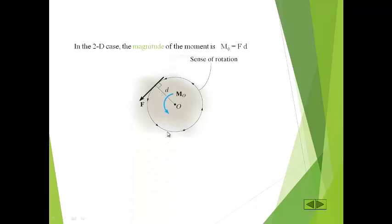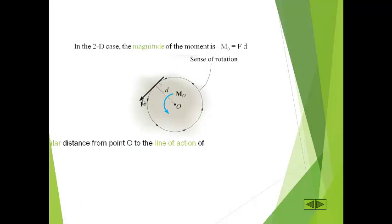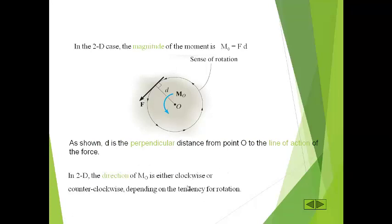In the two-dimensional case, the magnitude of the moment is MO = F × D, where MO is the moment about point O. In the diagram, we apply a force and take the moment about O. Moment about O equals the product of F and D — F is the magnitude of the force and D is the perpendicular distance from O to the line of action of the force. In 2D, the direction of MO is either clockwise or counterclockwise. Here, the anticlockwise moment is calculated as positive.